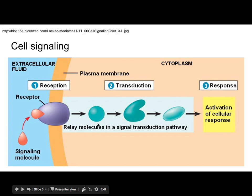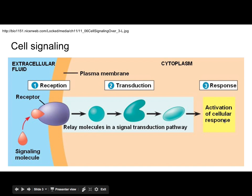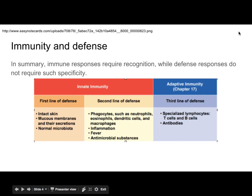If we have the receptor inside of the cell because our signal molecule is fat-soluble and hydrophobic, it'll bind and we'll get a transduction pathway. It may or may not involve kinases, but what we typically see is a genetic response — we're going to change how we express genes. That said, the big deal between immunity and defense is that immunity requires recognition, a very specific identification to trigger the response, whereas defense doesn't necessarily care — it just works for anything.